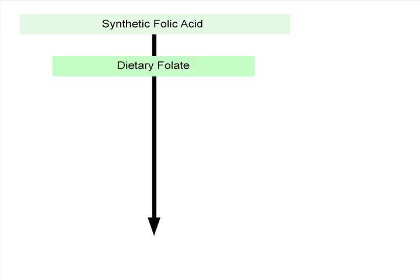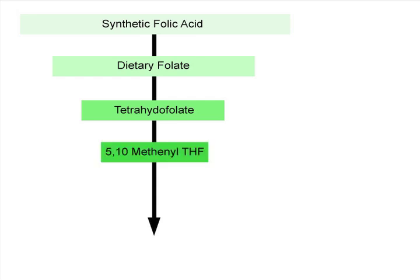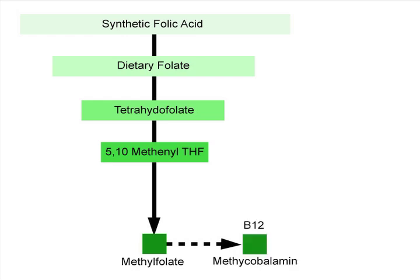Folate is naturally contained in many foods, including fruits and vegetables. The body takes in these foods and begins to convert the folic acid and folate. Several more conversions happen. The final step produces the active form of folate known as L-5-methylenetetrahydrofolate, or methylfolate for short. Notice the word methyl in its name — this gives us a clue that it will be involved in methylation. The active form of B12 is called methylcobalamin, which requires methylfolate to make SAM, which then donates methyl groups to cause methylation.